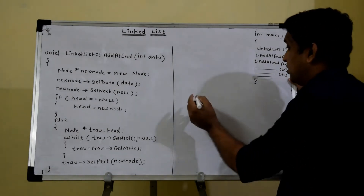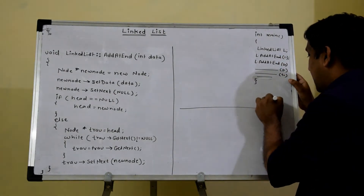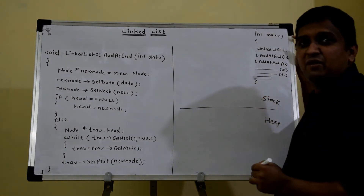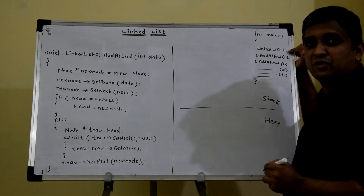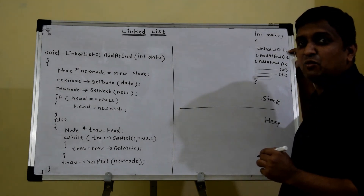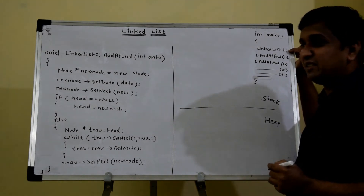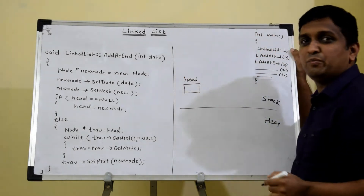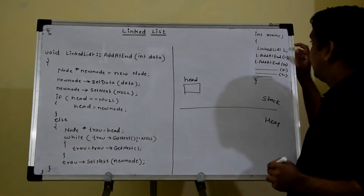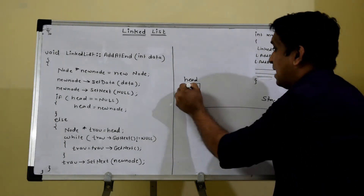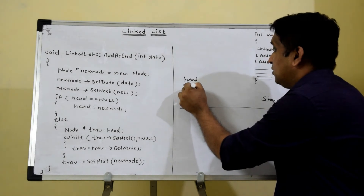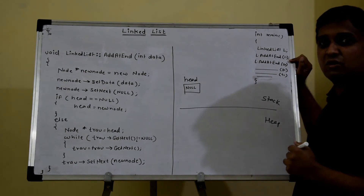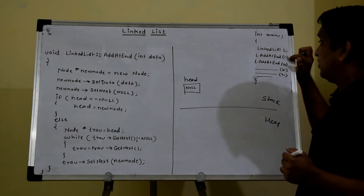Let's draw the diagram for this code. Suppose this is the boundary between stack and heap. In the main function, I am creating the object of the linked list class first. The linked list class has only head, so when the object is created, head is allocated onto the stack frame of main. After that, the constructor is called and inside the constructor I am initializing head to null. After that, add_at_end will get called.